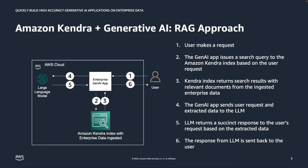Let's take a quick look at how the architecture of the RAG approach looks. The user makes a request, that request is translated into a query to Amazon Kendra to retrieve the most relevant information. The retrieved information or excerpts are then sent to the large language model as part of the prompt as context, and based on this information the large language model responds. The response is then sent back to the user.